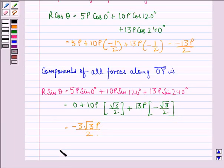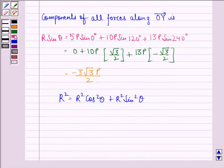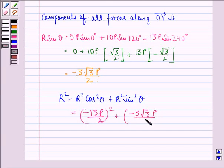Now, R squared is equal to R squared cos squared theta plus R squared sin squared theta. This is equal to minus 13p over 2 squared plus minus 3 root 3 p over 2 squared, which is further equal to 49p squared.